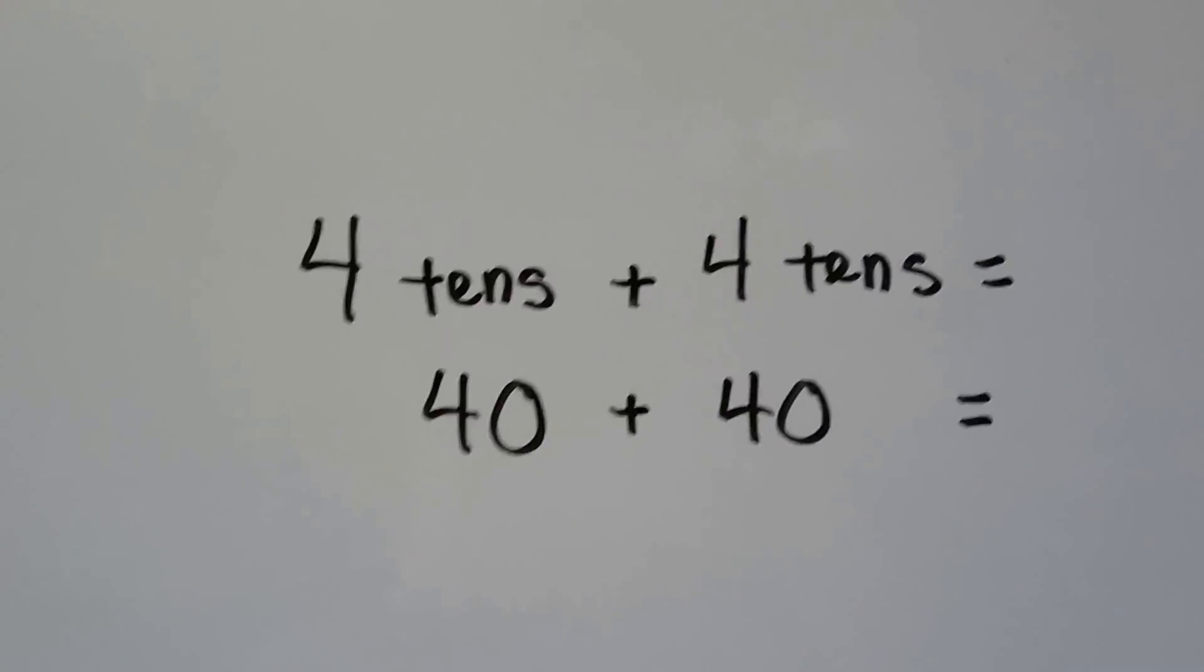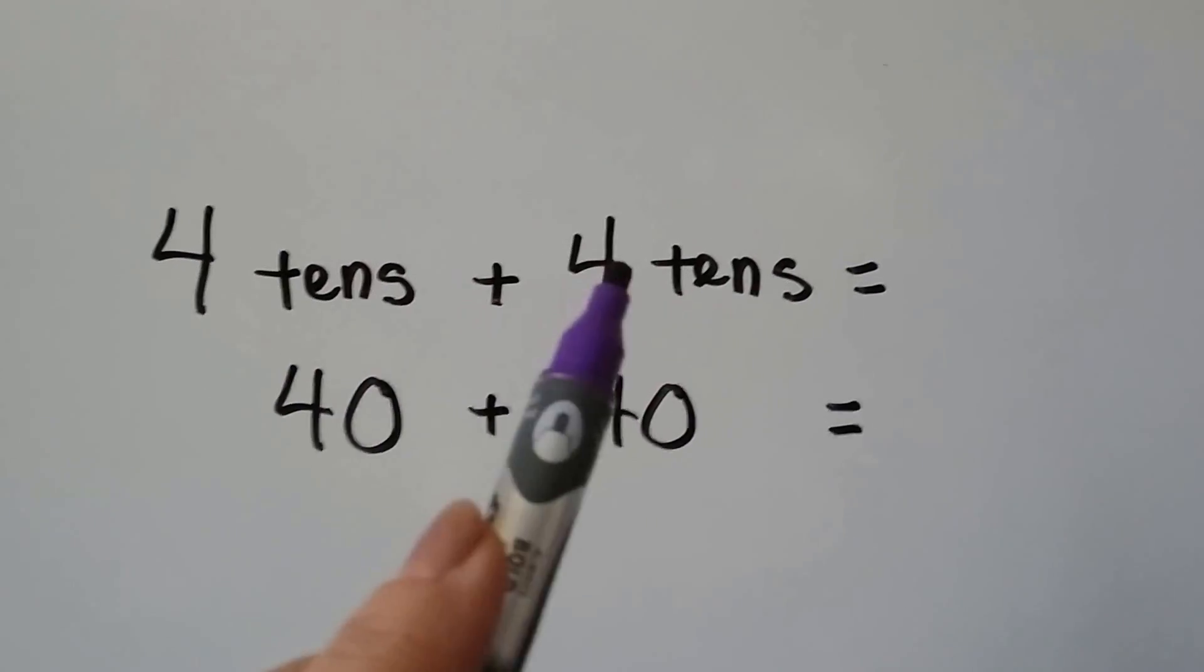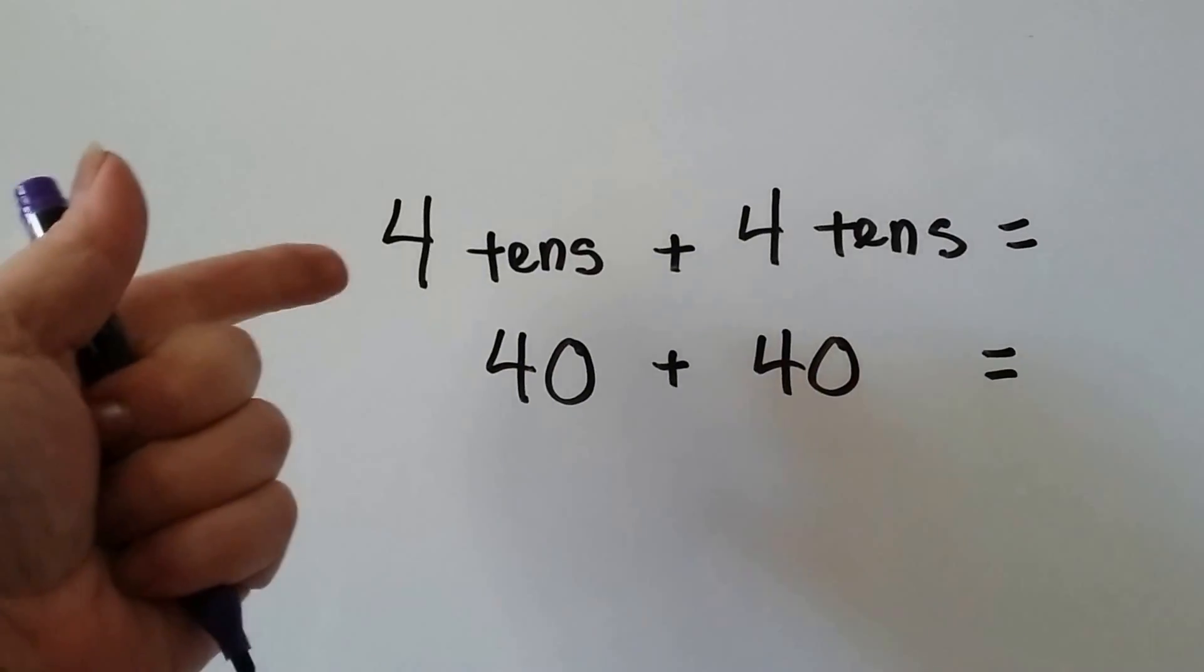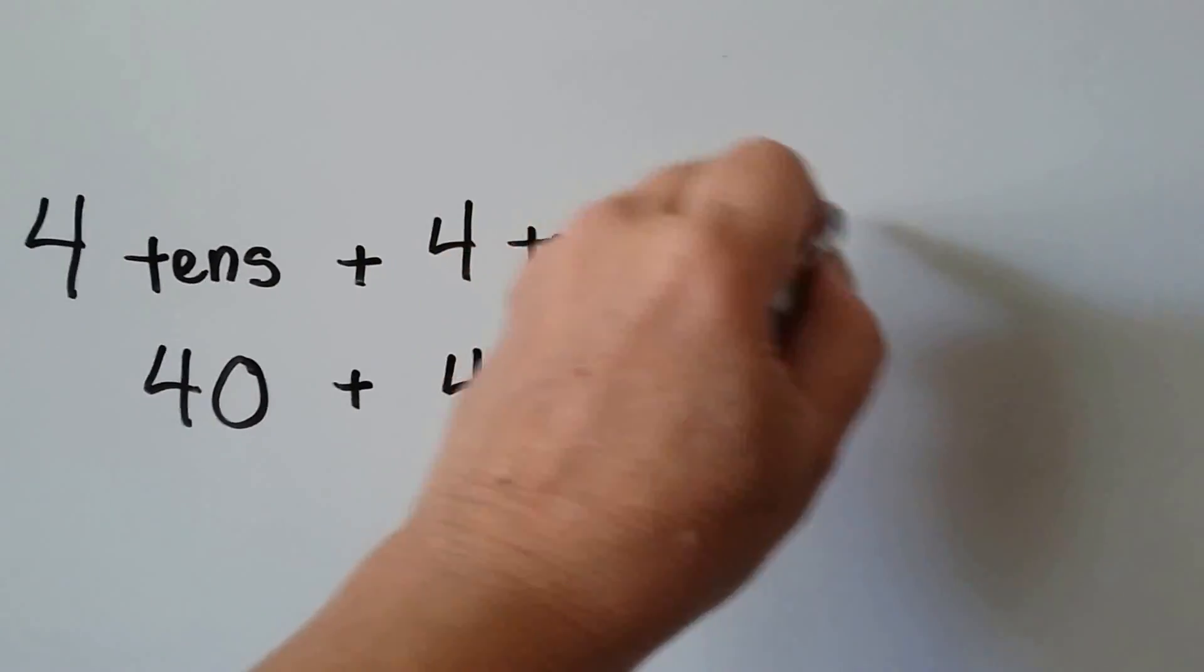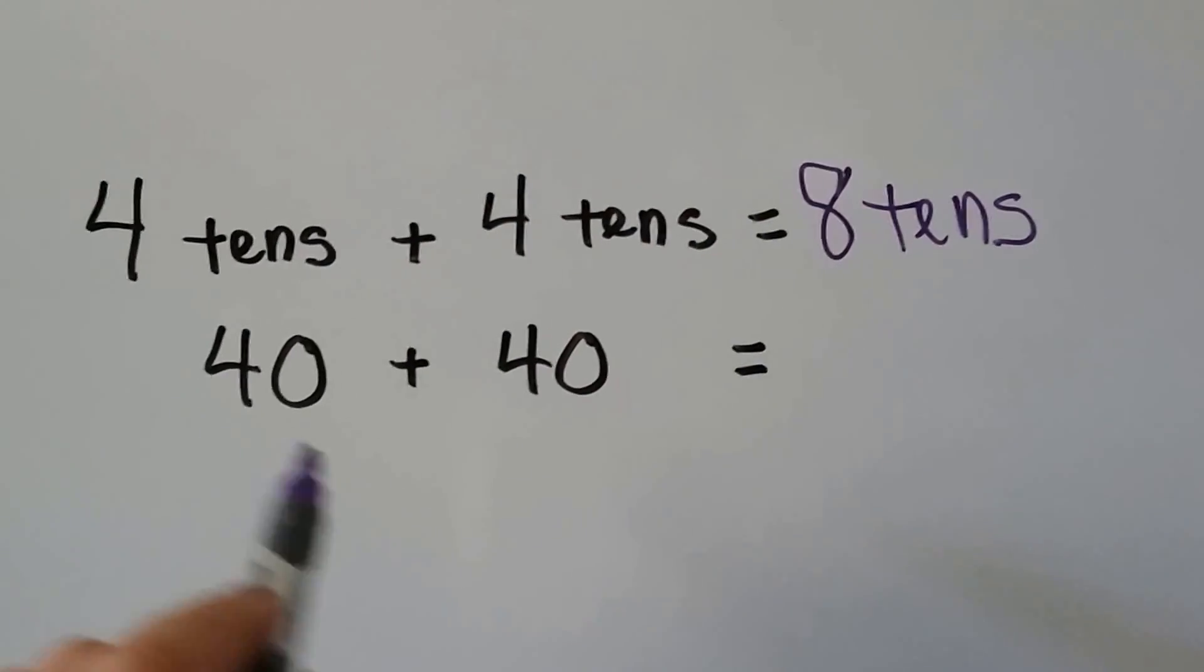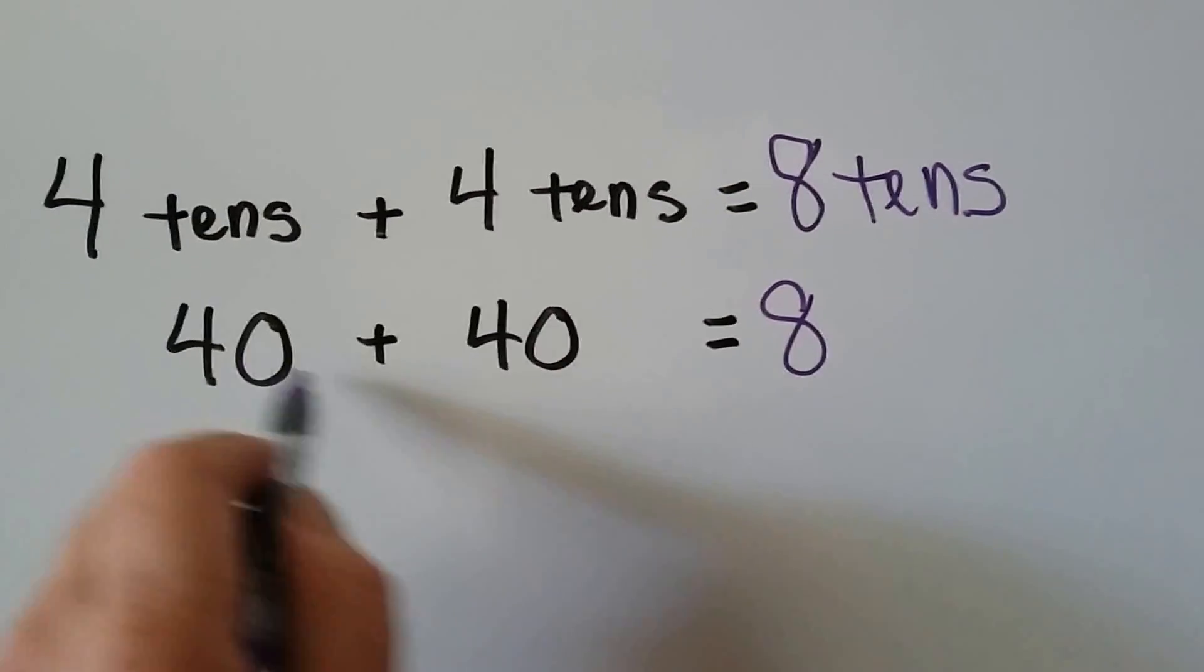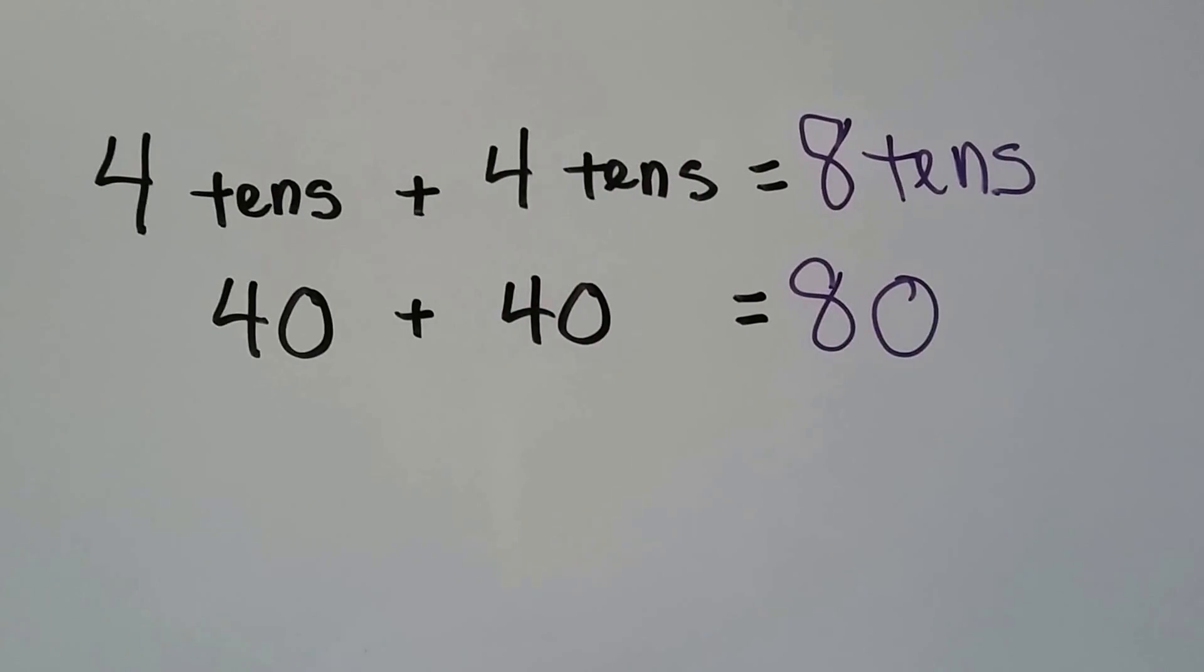Let's try it again. Four tens plus four tens. We think four plus four. Four plus four is four, five, six, seven, eight. We have eight tens. Forty plus forty. We think four plus four, which is eight, and we add the zero for the ones place so that the eight is in the tens place.